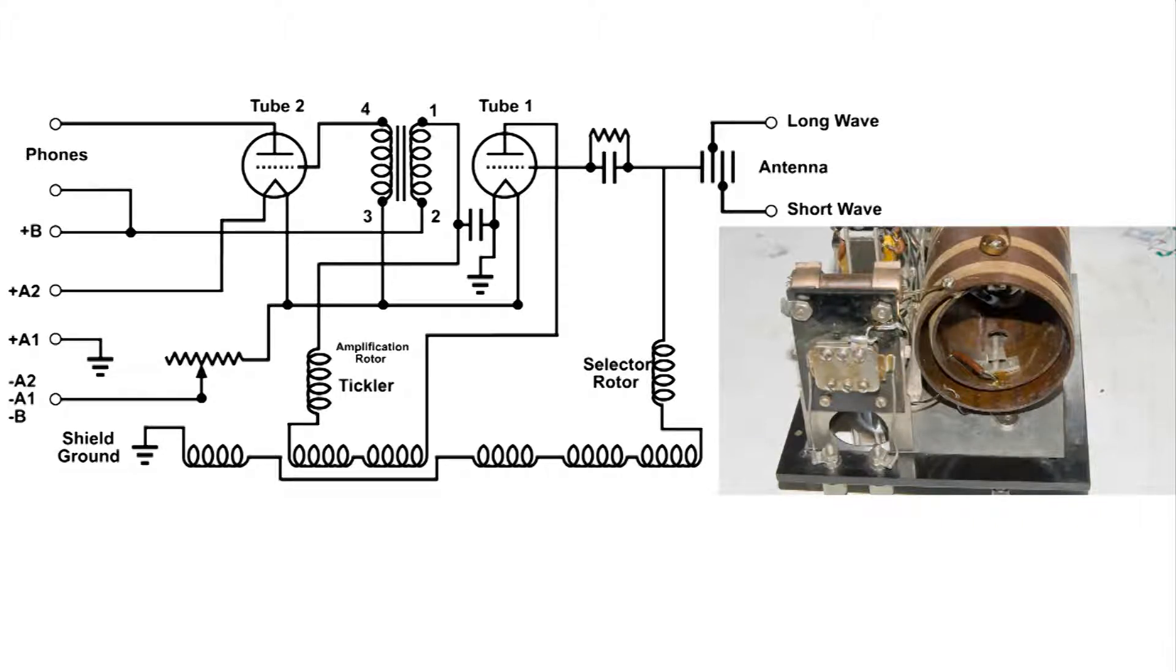This is one end of the radio, the tuning end or the antenna side of the radio. Right here is the capacitor that is connected to the antenna. This is the grid leak resistor, and this is the selector rotor which tunes the radio to different stations.